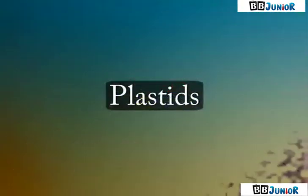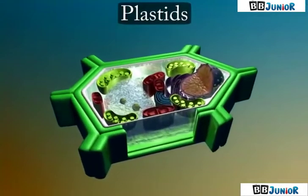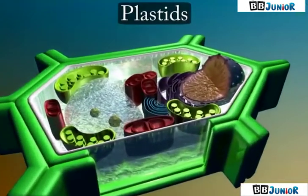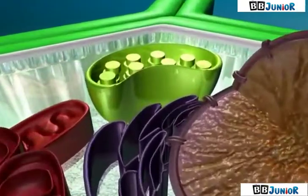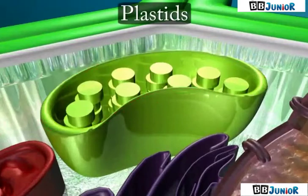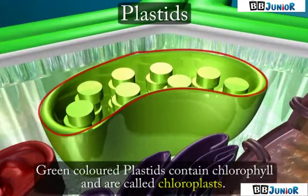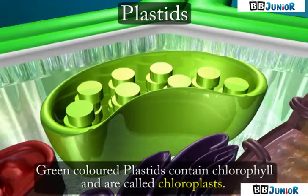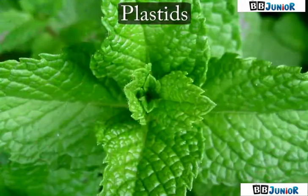Plastids. Plant cells have very minute colored organelles called plastids. Plastids are of different colors. Green colored plastids contain chlorophyll and are called chloroplasts. They provide green color to the plants.